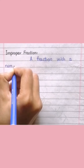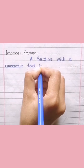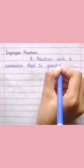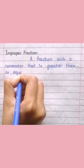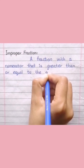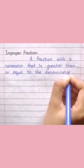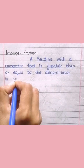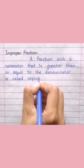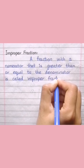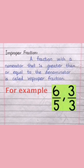Improper fraction. A fraction with a numerator that is greater than or equal to the denominator is called an improper fraction. For example, 6 by 5, 3 by 3.